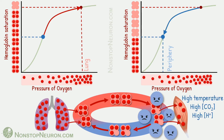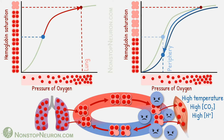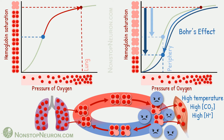Due to metabolic activity, temperature, carbon dioxide, and acid levels are high at peripheral sites. All these factors decrease affinity of hemoglobin for oxygen. So at peripheral sites, the oxygen hemoglobin dissociation curve is shifted to the right. This is a good thing, because now the equilibrium is achieved at a lower point where saturation is lesser, meaning more oxygen is released. Without the shift, hemoglobin would release only a small amount of oxygen, but due to the right shift, hemoglobin releases even more oxygen at the same partial pressure. This increased release of oxygen by carbon dioxide and hydrogen is also called the Bohr effect.